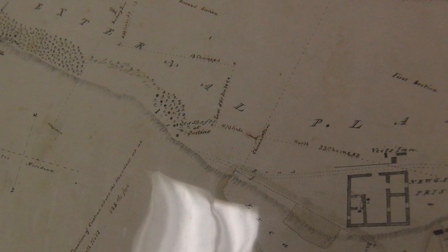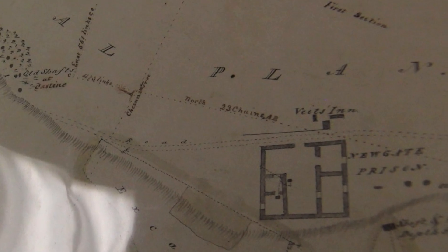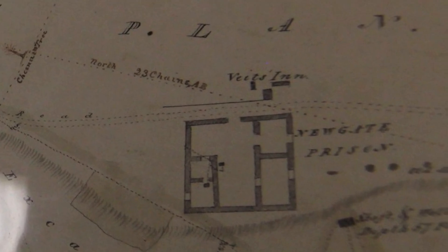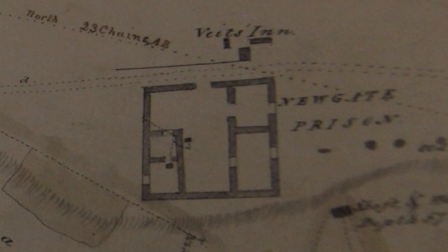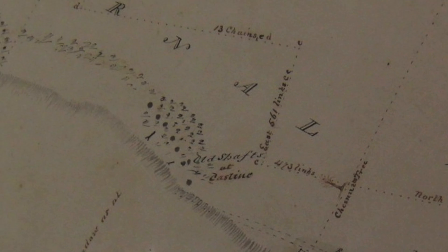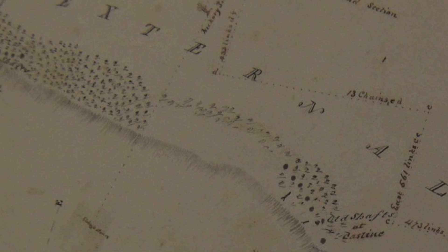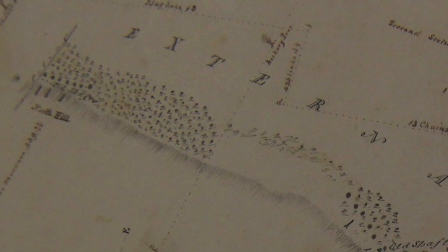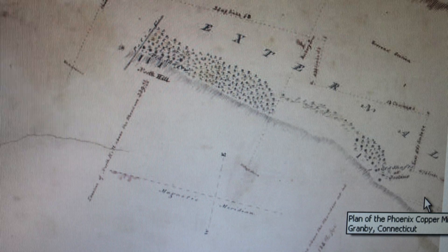What I did was take the early 1800s map and find a landmark I could relate to a modern map — and that was the corner of Newgate Prison. I measured from the corner of Newgate Prison to the mine site. The map was in rods, so I simply converted rods to feet.